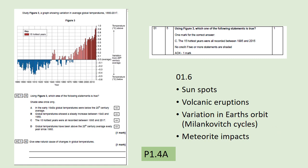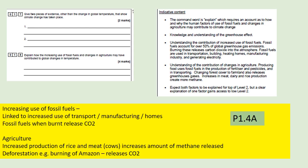Question 1.7 asks for two pieces of evidence — other than changes in global temperature — that show climate change is taking place. These are essentially effects of climate change. Good answers include rising sea levels, retreating glaciers, melting ice caps, and increased desertification. Long-term evidence includes ice cores and coral reefs, where scientists can examine oxygen isotopes. The most obvious answers are melting ice caps and rising sea levels.